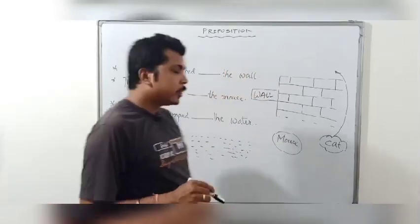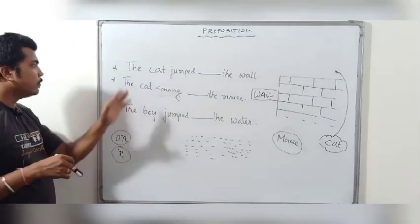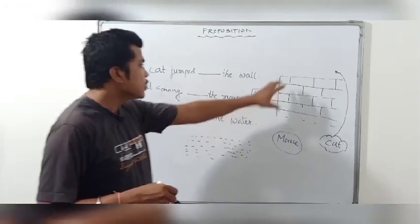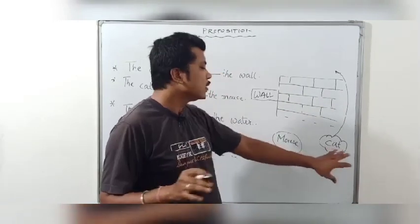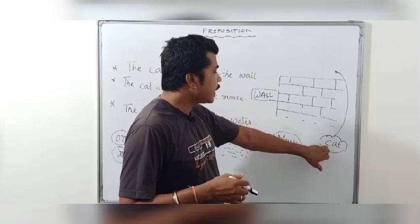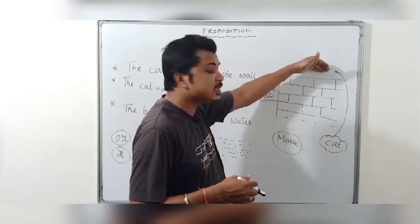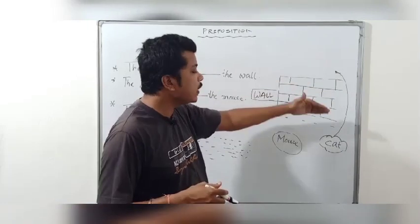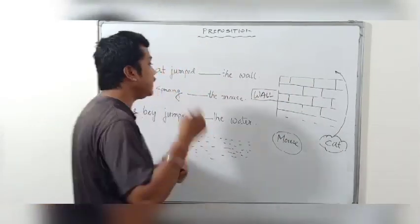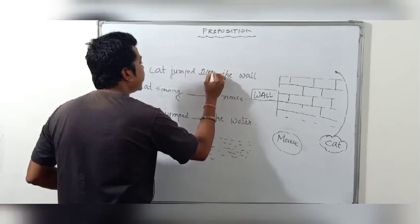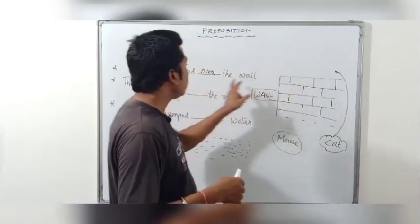Dear student, here are some more prepositional words with new examples. First example: the cat jumped over the wall. If the cat jumps from one side of the wall to the other — crossing from one side to the other via the upper side — in that case we use the prepositional word 'over'. That means crossing from one side to the other, passing over the top.